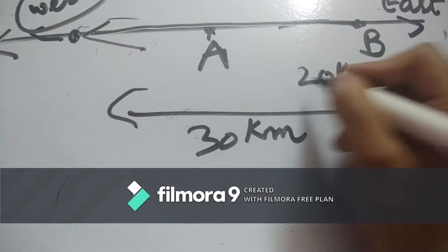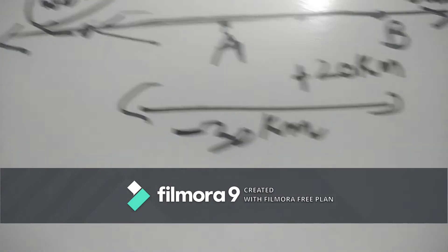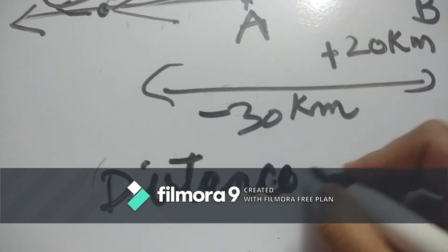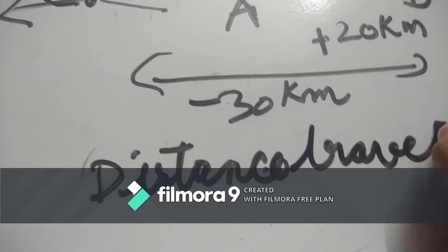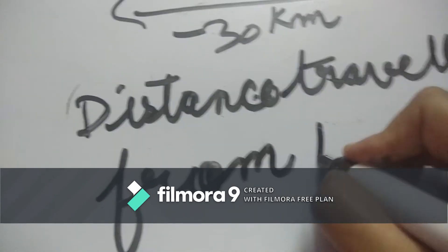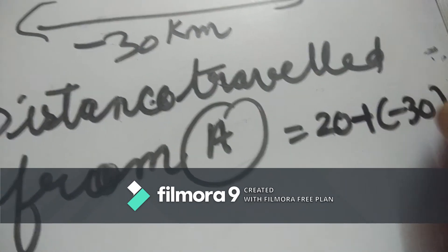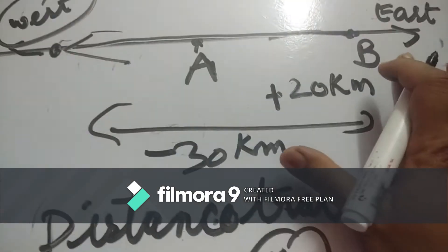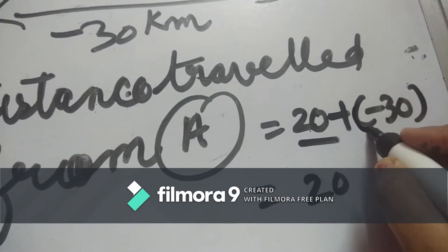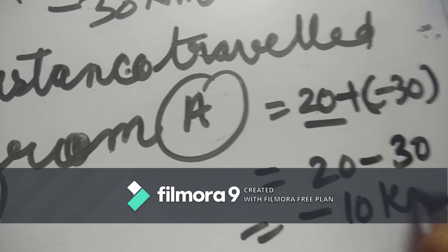If we move in the east direction we represent it as positive, and if we move in the west direction we represent it as negative. So the total distance is 20 plus minus 30. She goes 20 kilometers east, then 30 kilometers back west. Adding these: 20 plus minus 30 — the minus sign is bigger, so the result is minus 10 kilometers.